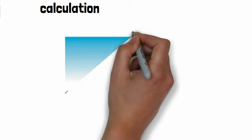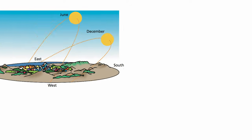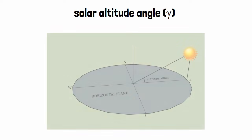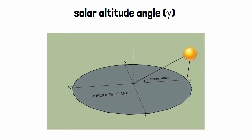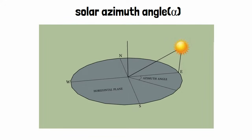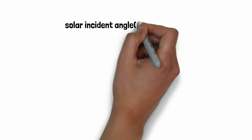To properly design shading devices, it is necessary to understand the position of the sun in the sky. The position of the sun is expressed in terms of altitude and azimuth angle. Solar altitude is the angle between sun rays and the horizontal plane, denoted by gamma. Solar azimuth angle is the angle between the projection of the sun's rays on the horizontal plane and the south direction, denoted by alpha. Solar incident angle is the angle made by the sun rays with the surface, denoted by beta.